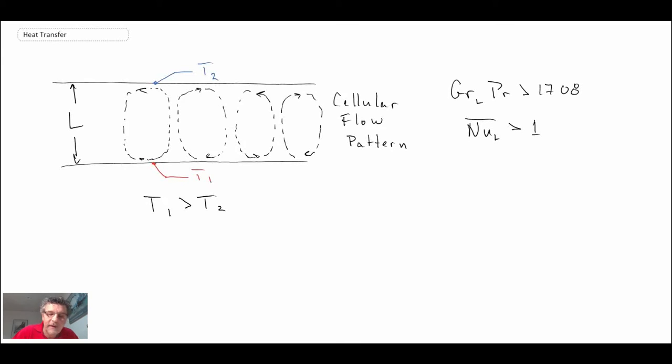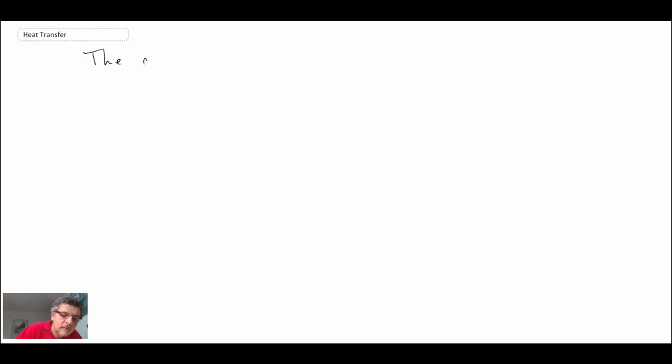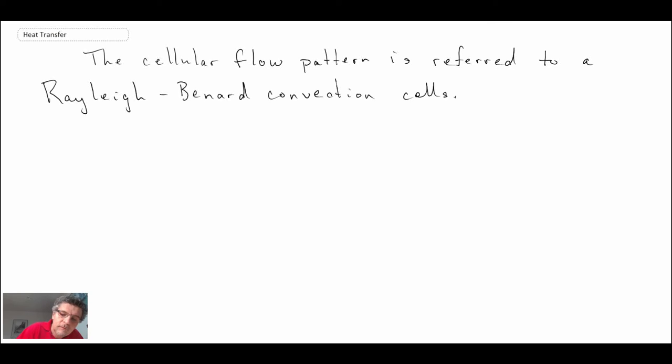This cellular pattern that we're looking at actually has a name—it's referred to as Rayleigh-Bernard convection cells. Those are the cells that exist between the two horizontal plates with the heated surface at the bottom.